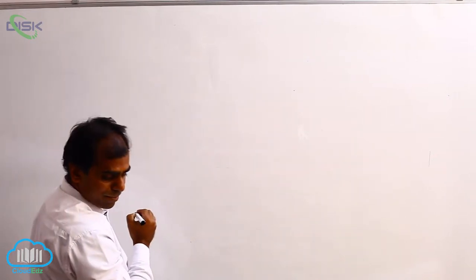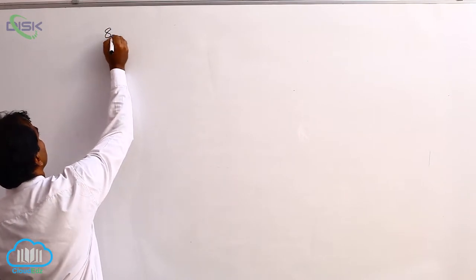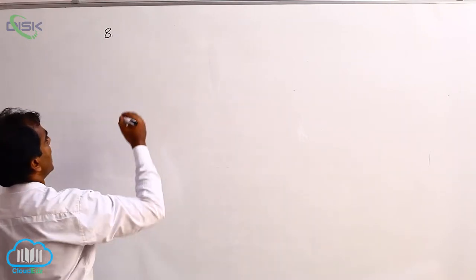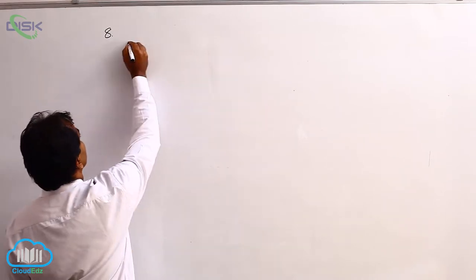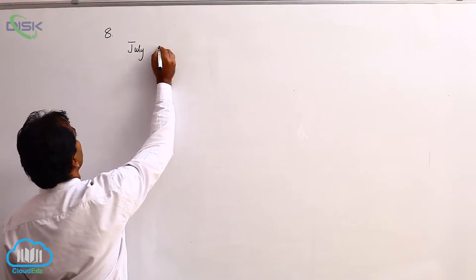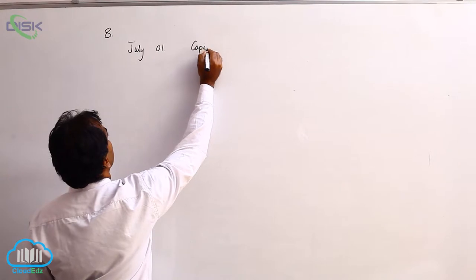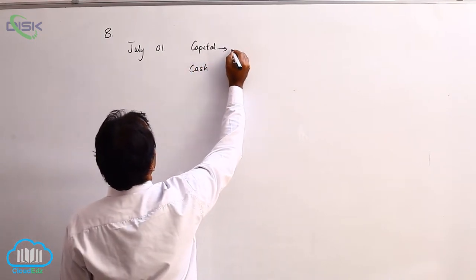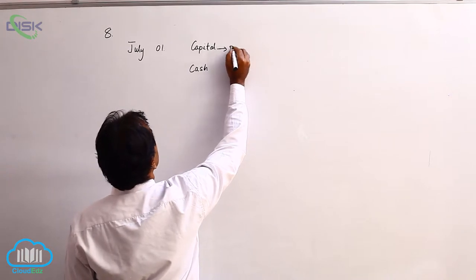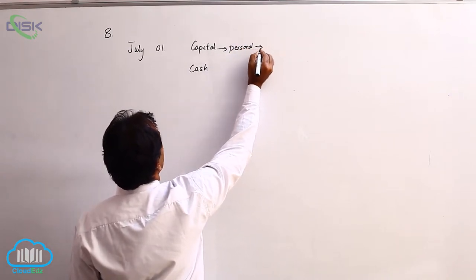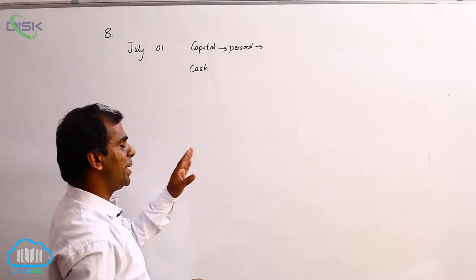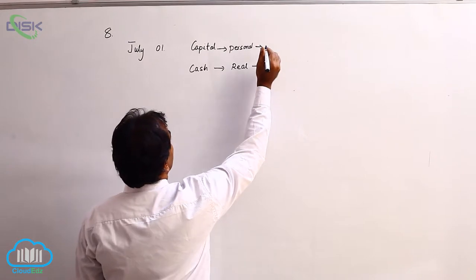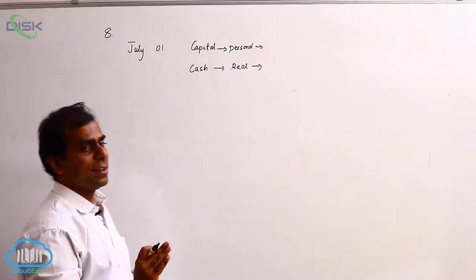So the last problem, problem number eight — the first transaction is: started business with a capital of 90,000. The accounts affected here are capital and cash. Capital, being an amount given by the owner, is a personal account. You decide whether the owner is the giver or receiver and whether to debit or credit. Cash is a real account — you decide whether it should be debited or credited and write the journal entry.